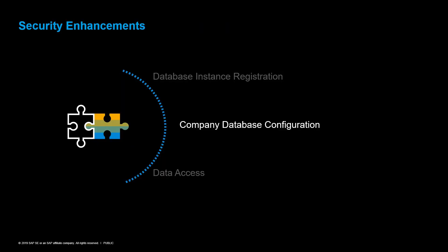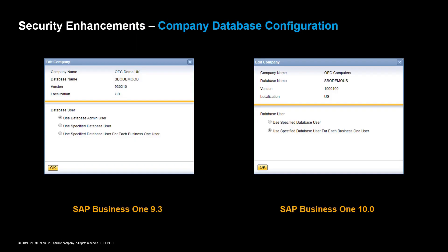Let's see the changes on the Company Database level. The Database Admin user was removed in SAP Business One version 10, as this is a very high-level authorization. In order to have better security, the Database Admin user option is no longer available for managing the connection on the Company Database level. The most secure and recommended option is to specify a Database user for each Business One user. The system automatically generates a pair of Database users without administrator privileges for each SAP Business One user.